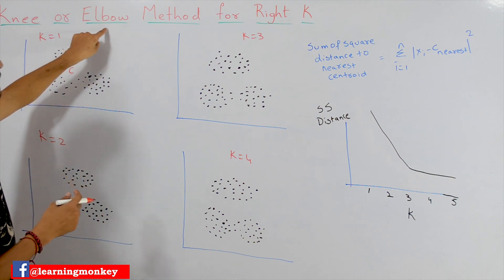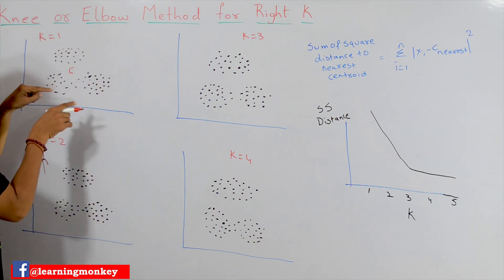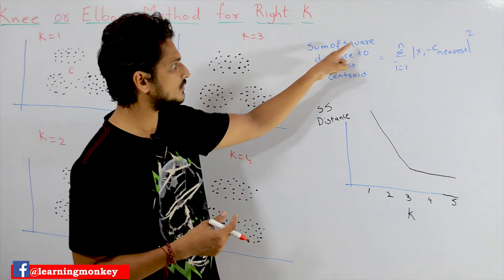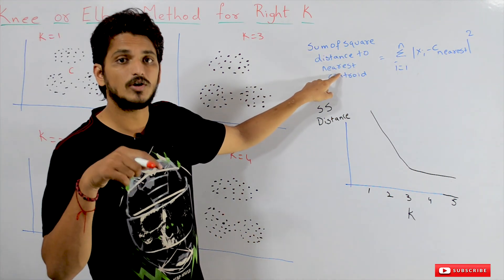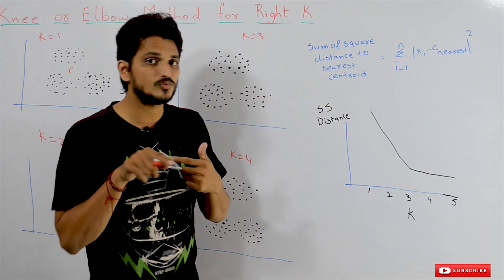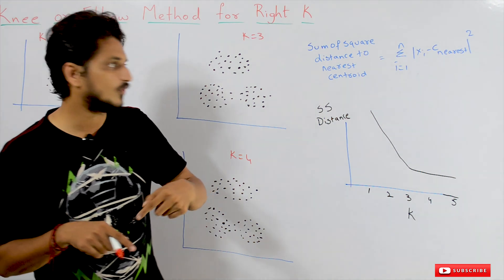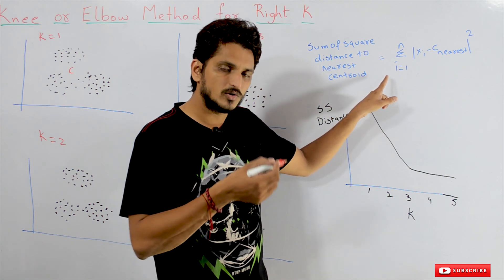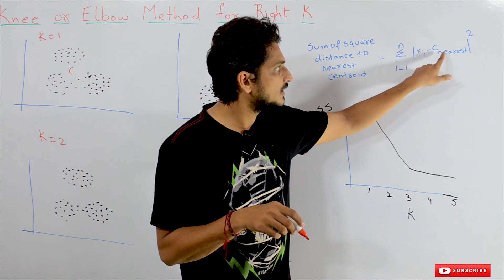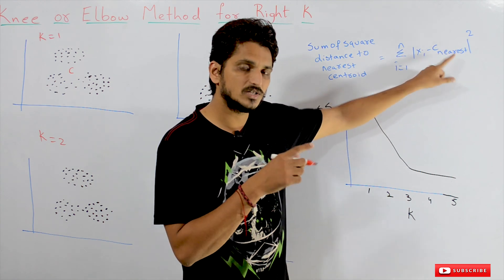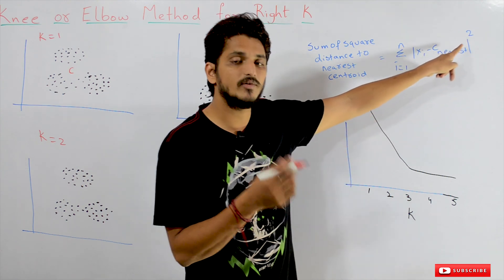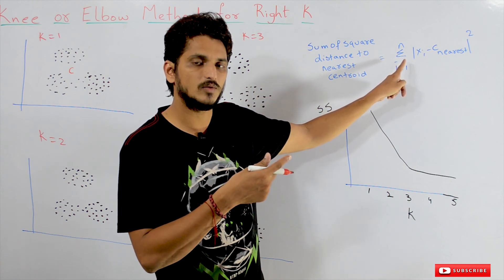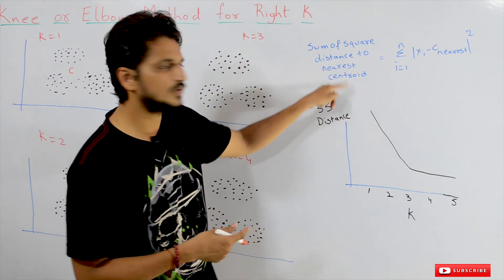In the elbow method or knee method, we have to calculate the sum of squared distances of each and every data point to the nearest centroid — that is very important to understand. This is expressed as sigma i equals 1 to n, where n is the total number of data points, and we calculate the squared distance (x_i minus c_nearest) squared for each point, then sum all those squared distance values. That is why it is called the sum of squared distances to the nearest centroid.